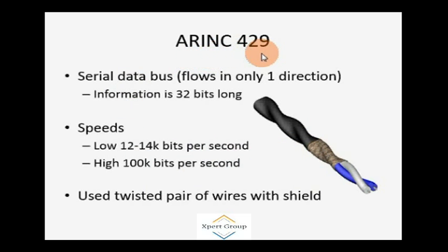ARINC 429 is a commercial data traveling cable used on commercial aircraft in vast quantity. ARINC 429 is a serial data bus; flows in only one direction. Information is 32-bit long. Data speed at low speed works at 12 to 14 kilobits per second; at high speed, 100 kilobits per second. Uses twisted pair of wires with shielding. These are two pairs in a twisted configuration with a shield.